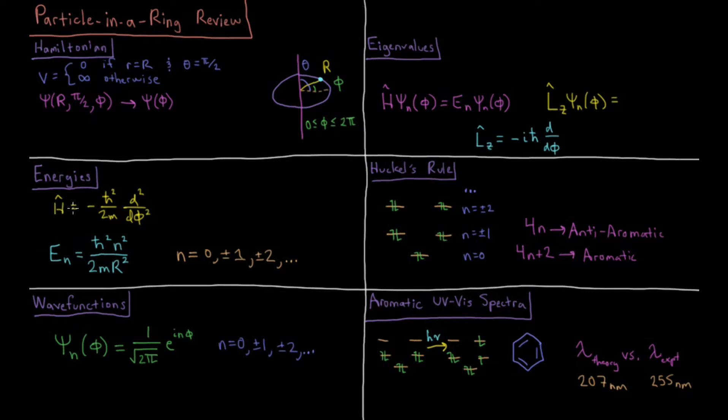The Hamiltonian for this system ends up being inside the system just the kinetic energy minus h-bar squared over 2 times mass, second derivative with respect to phi. The energies of this system, once we solve this Hamiltonian for h-psi equals e-psi, ends up being that we get quantized energies, e-sub-n equals h-bar squared n-squared over 2mr-squared.